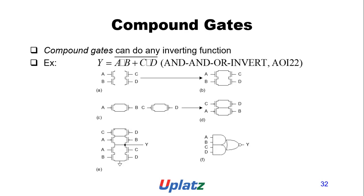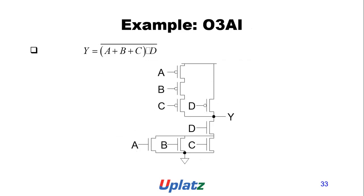Compound gates can implement any logic function. For example, Y equals NOT(AB OR CD). The compound symbol is shown with inputs A, B, C, D and their outputs. Another example: Y equals NOT(A OR B OR C AND D), and the transistor network is shown.